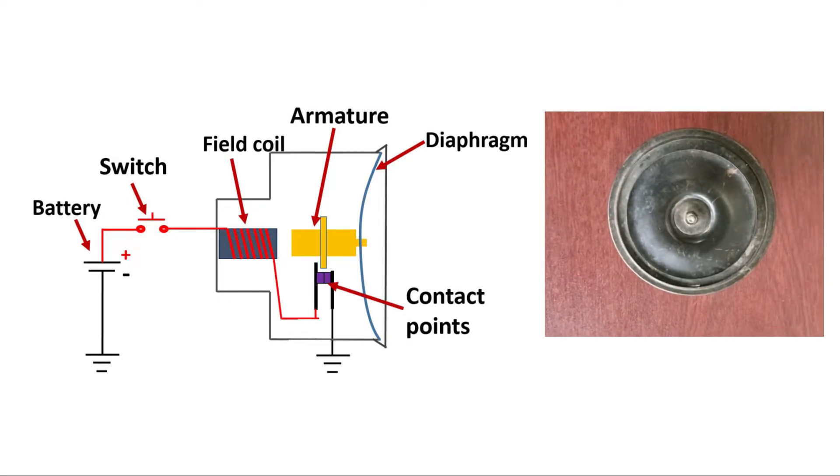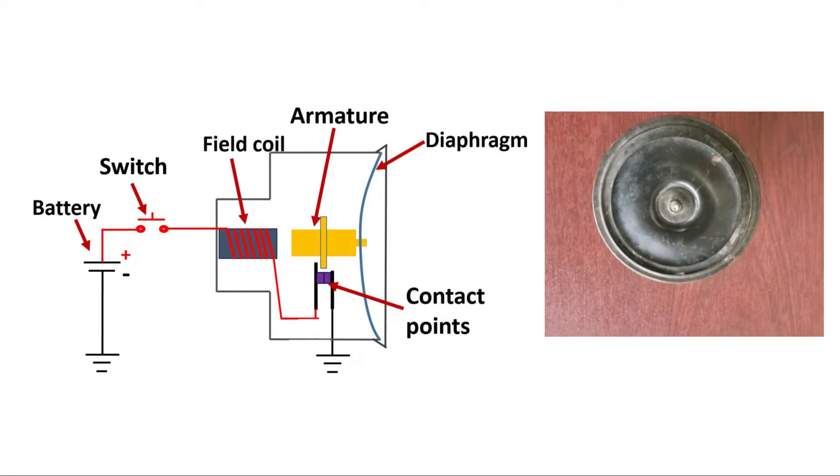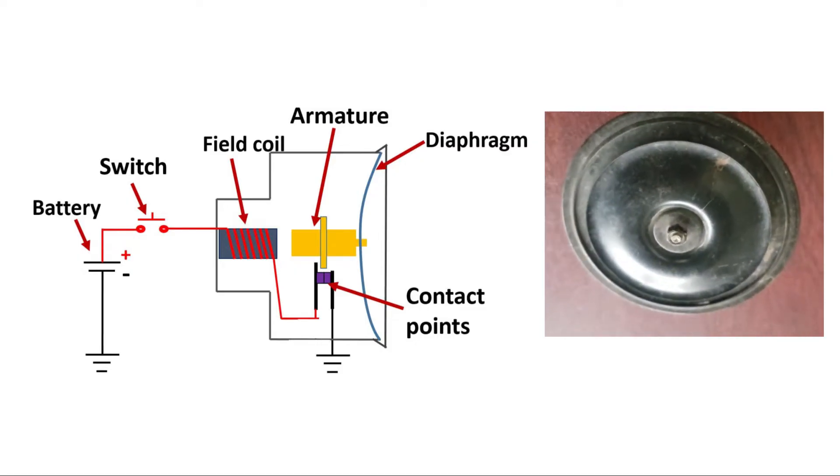The diaphragm is a thin, flexible, circular plate that is secured around its outer edge by the horn housing, allowing the center to flex.